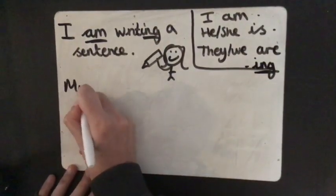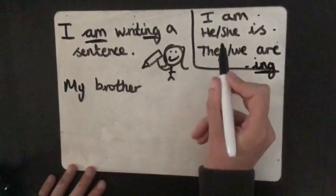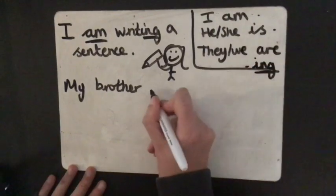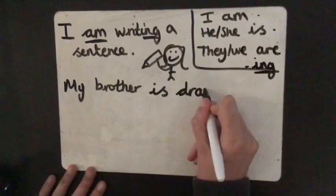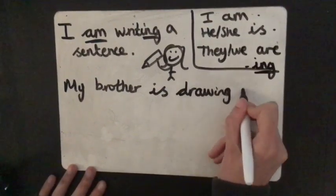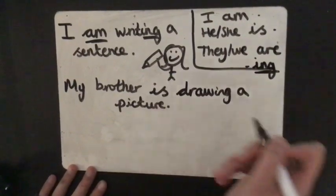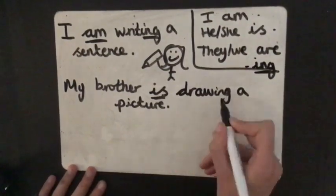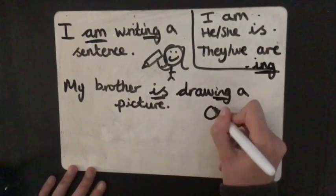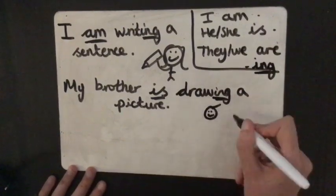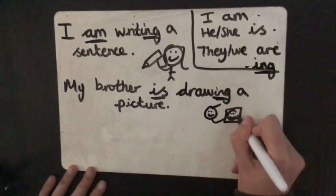Okay my brother. My brother. That's a he isn't it? My brother. So it's going to be an is. My brother is drawing a picture. Full stop. So there's my to be and there's my ing for my verb. And here's my brother with his short hair. And here's him drawing a picture of a smiley face.